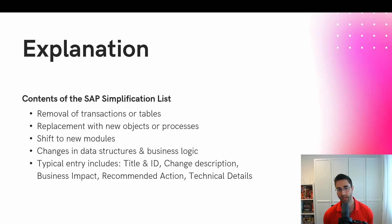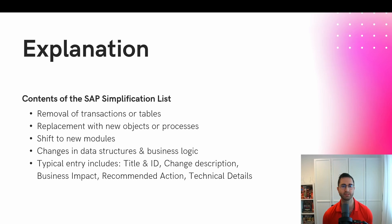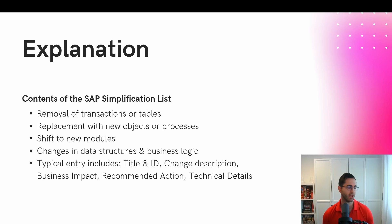A typical entry in the SAP Simplification List includes a title and ID, a change description, the business impact, recommended actions, technical details, and most of the time a reference to an SAP Note.